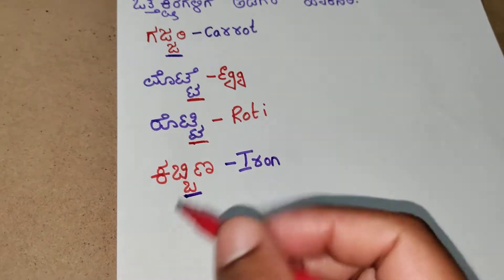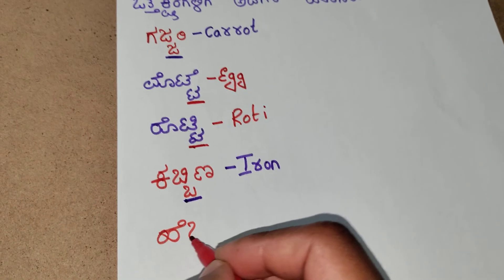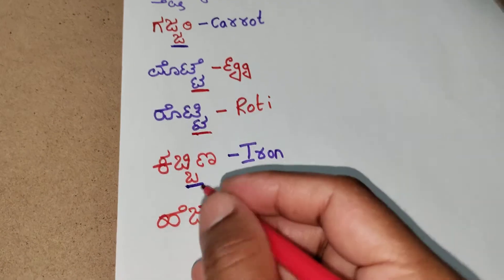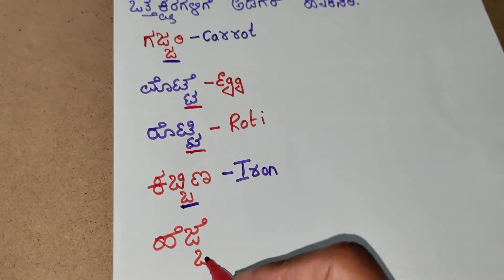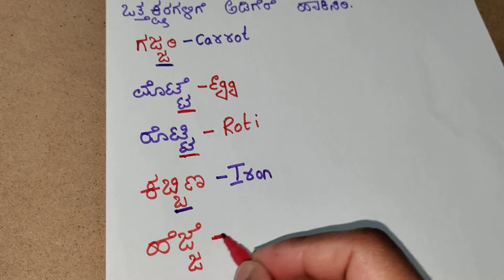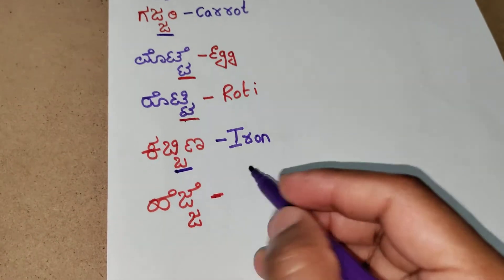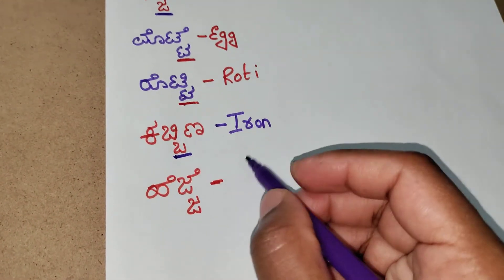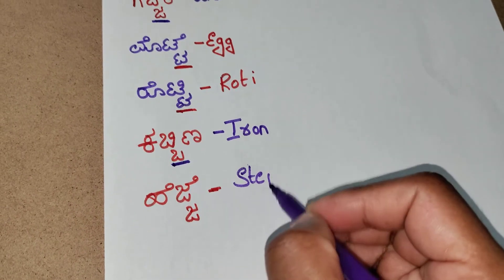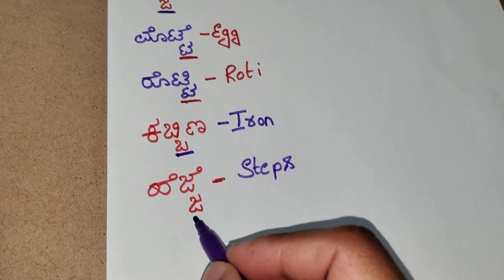The next word is hae jay. Ja ke javato — that means hae jay means steps. Here the otthakshara is javato.